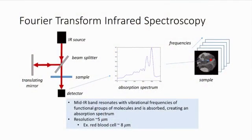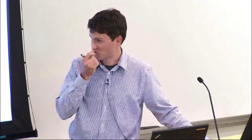To begin, I'll describe what Fourier Transform Infrared Spectroscopy is. It is a type of chemical imaging that uses infrared light. Infrared light is emitted from a source and passes through a beam splitter. You have a translating mirror that allows you to change the phase of the returning light. They interfere with one another and pass through the sample. The detector records what's called an interferogram, which, using the Fourier Transform, gives you a measure of absorption. As the infrared light passes through, it resonates with vibrational frequencies of functional groups of molecules and is absorbed; otherwise it passes through. We get a spectrum showing, for different frequencies of infrared light, how much is absorbed and how much passes through.